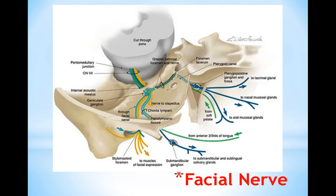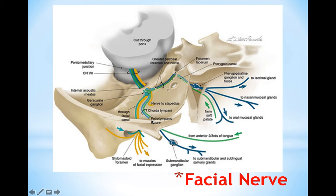Seventh is the facial nerve, which is one of the most important nerves in our field. The facial nerve leaves the cranial cavity, enters the internal acoustic meatus, then enters the bony facial canal. One of its features is the geniculate ganglion, and the nerve gives off the greater petrosal nerve. Important branches also include the nerve to the stapedius muscle of the ear, and the chorda tympani nerve, responsible for the special taste sensation of the anterior two-thirds of the tongue and the parasympathetic innervation of both the submandibular and sublingual glands.